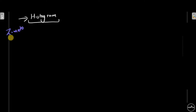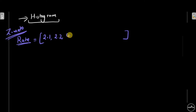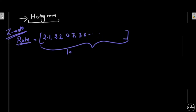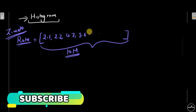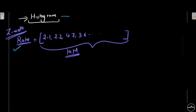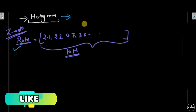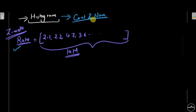We are working on the Zomato dataset. In Zomato, one of the features is 'rating' or 'rate'. Let's say I have all the ratings in a list — 2.1, 2.2, 4.4, 4.7, 3.6, and so on. Let's say I have 10 million ratings total. A histogram shows the distribution of a feature — that feature must be continuous and numerical in nature.